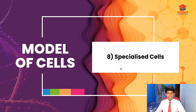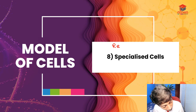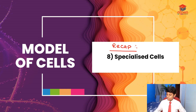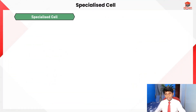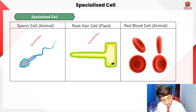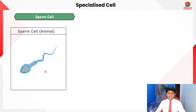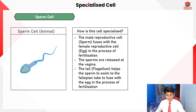For segment eight, specialized cells. Like typical cells, we have specialized cells — a recap from last year. The three specialized cells are: the sperm cell (from animal), the root hair cell (from plant), and the red blood cell (from animal). Let's look at the sperm cell first.